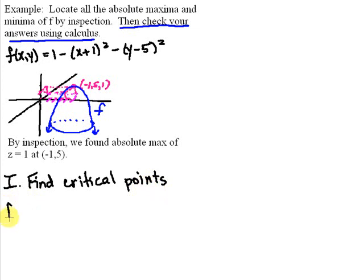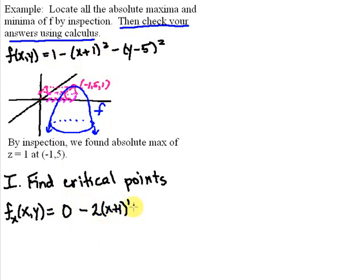In order to find critical points of a function of two variables, we need to find the first order partials. The first derivative with respect to x, holding y as a constant: the derivative of 1 is just zero, minus the derivative of (x+1)² with respect to x is 2(x+1) times the derivative of (x+1), which is 1. Since y is a constant, (y−5)² is a constant, so that term is zero. Simplifying, we get negative 2 times (x+1) for our partial with respect to x.